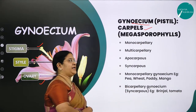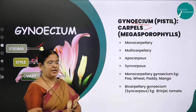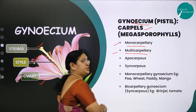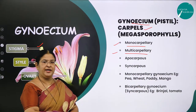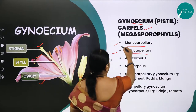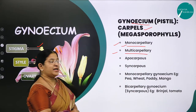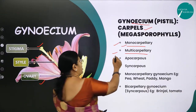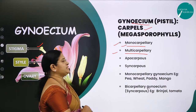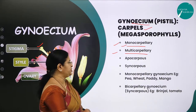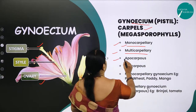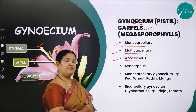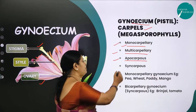Let us study some terms and terminologies. When the gynoecium is made up of a single carpel, it is called monocarpellary. When a gynoecium or pistil is made up of more than two carpels, it is called multicarpellary. Carpels are nothing but the units of gynoecium. When the carpels are free and not fused, we use the specific term apocarpous.